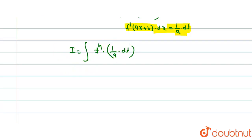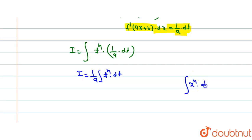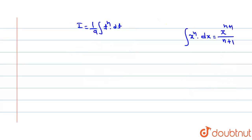Take (1/a) outside from the integral since it is a constant, giving (1/a) ∫ tⁿ dt. We know the formula: ∫ xⁿ dx = x^(n+1) / (n+1). Using this formula, we get I = (1/a) · t^(n+1) / (n+1) + C.